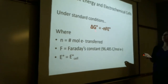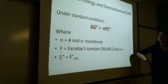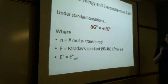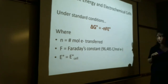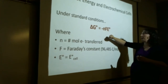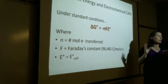For a spontaneous process, delta G is negative. We want delta G to be negative if this is a spontaneous process. If E-cell is positive, that is spontaneous. E-cell and delta G should be opposite signs — for a spontaneous cell reaction, you have a negative delta G and a positive E-cell, because the negative of a positive gives a negative, and the negative of a negative gives a positive.